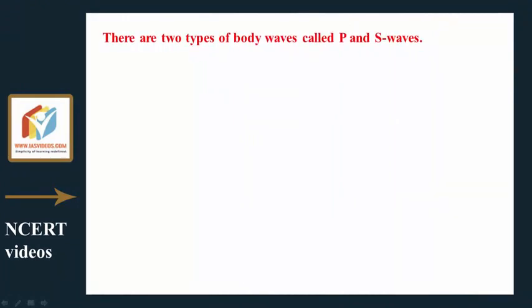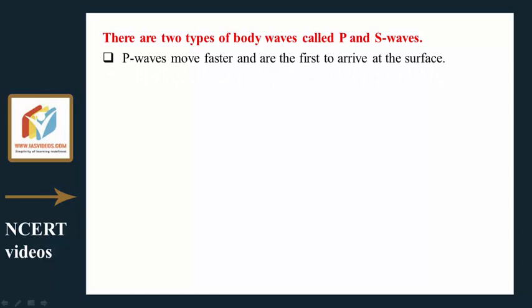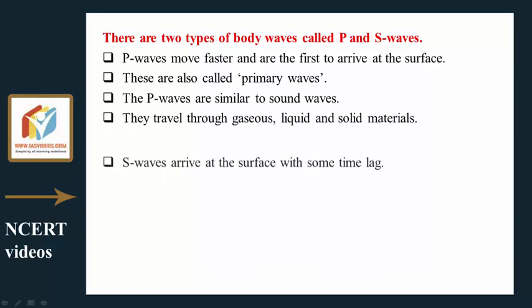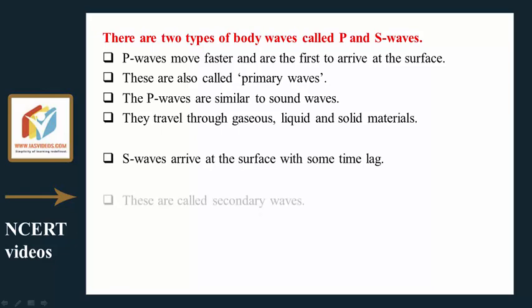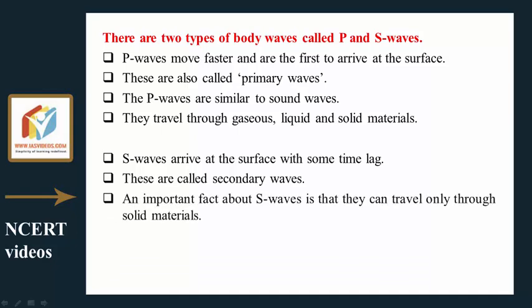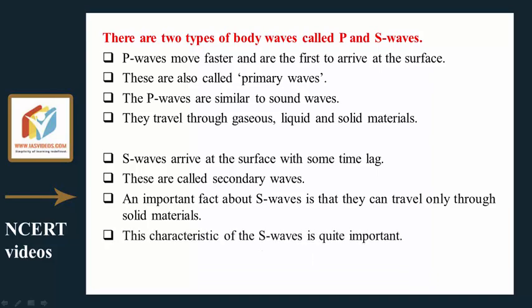There are two types of body waves: P waves and S waves. P waves move faster and are the first to arrive at the surface; they are also called primary waves. P waves are similar to sound waves and travel through gaseous, liquid, and solid materials. S waves arrive at the surface with some time lag and are called secondary waves. An important fact about S waves is that they can travel only through solid materials.